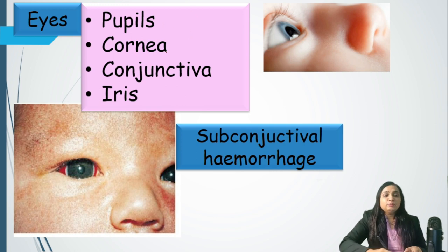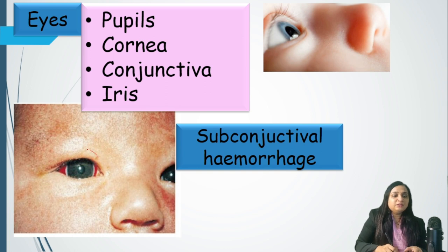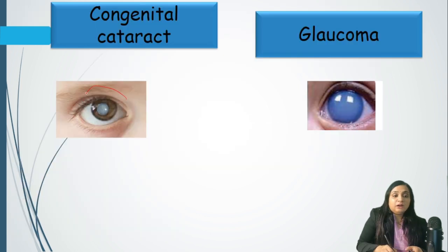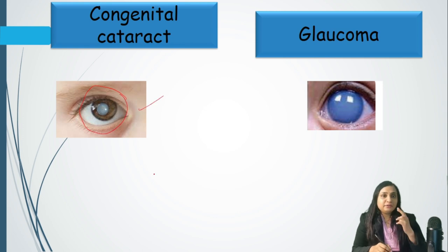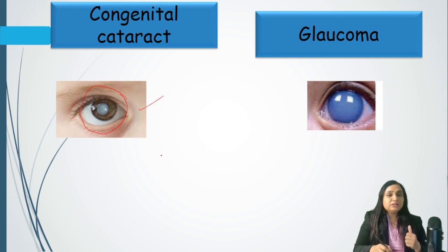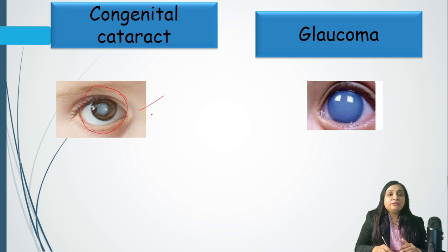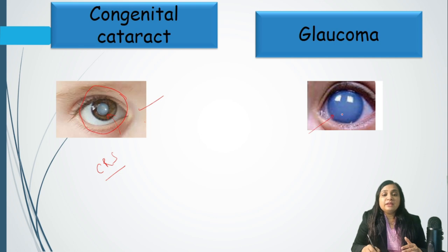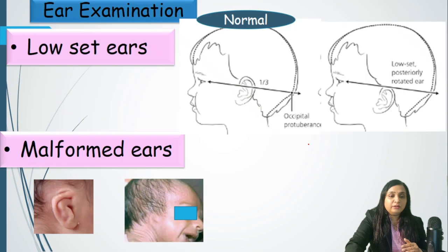After the head, we need to see the eyes. Pupil, cornea, conjunctiva, and iris have to be assessed. An important finding is subconjunctival hemorrhage — due to normal delivery, nothing needs to be done; just reassurance, as it resolves in two to four weeks. We also need to check for cataract using a torch; if there is a white reflex instead of red reflex, it means there is a cataract — which could indicate congenital rubella syndrome. Blue sclera, as seen in this picture, could be a part of congenital glaucoma.